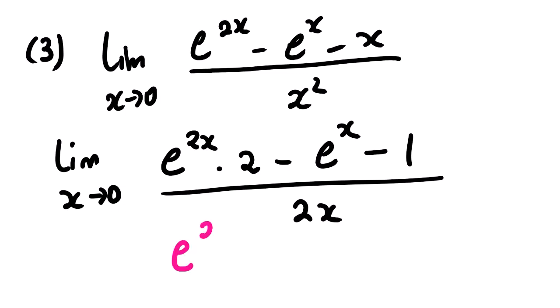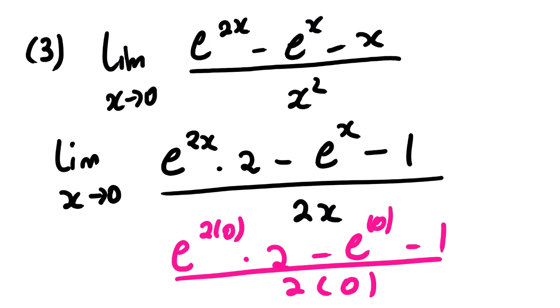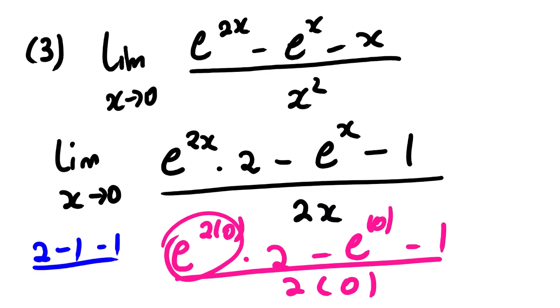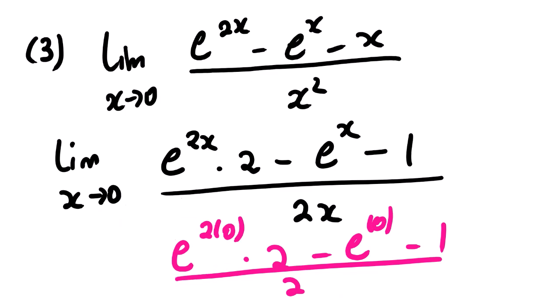Now let us apply L'Hôpital. Substituting x = 0 into the first derivatives, we get e^(2·0) multiplied by 2, minus e^0, minus 1, all over 2(0). This gives 1·2 minus 1 minus 1 over 0, which is 2 minus 2 over 0 — another unknown. So we need to apply L'Hôpital again.